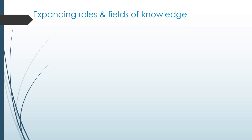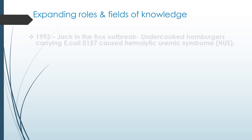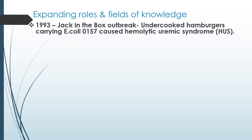Regarding expanding roles and fields of knowledge: in 1993, Jack in the Box, a fast food chain on the west coast, had an outbreak associated with undercooked hamburgers carrying E. coli O157, which caused hemolytic uremic syndrome in children. There is no real treatment for it — patients either cleared themselves or they did not.